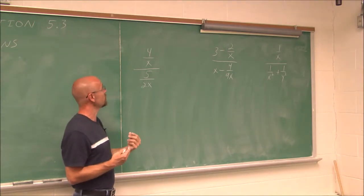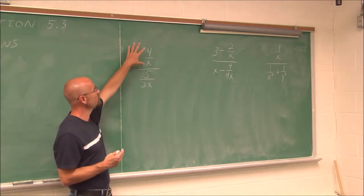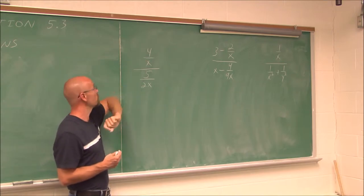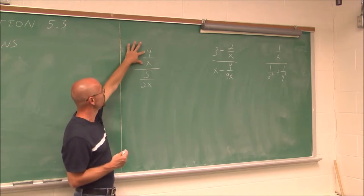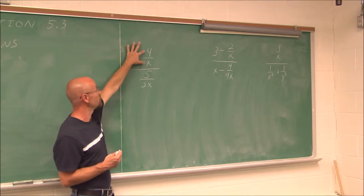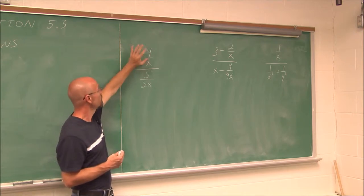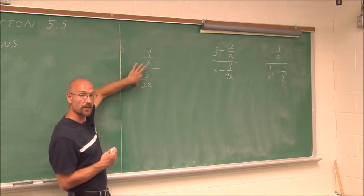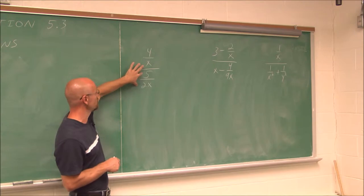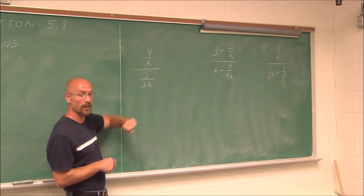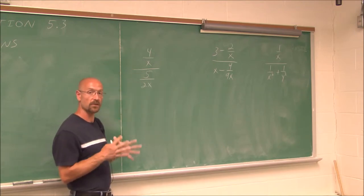Method 1 basically states: simplify the numerator to a single fraction. If we look at this, the numerator is already a single fraction — 4 over x. The second step is to simplify the denominator to a single fraction. In this case, 5 over 2x. It's already a single fraction, so those steps are done.